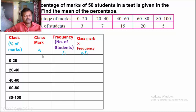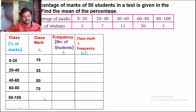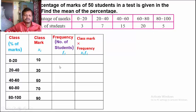Now calculate the class marks. For 0 to 20: (0 + 20) / 2 = 10. For 20 to 40: (20 + 40) / 2 = 30. Similarly the class marks are 50, 70, and 90. Now write the number of students (frequency): 3, 7, 15, 20, and 5.